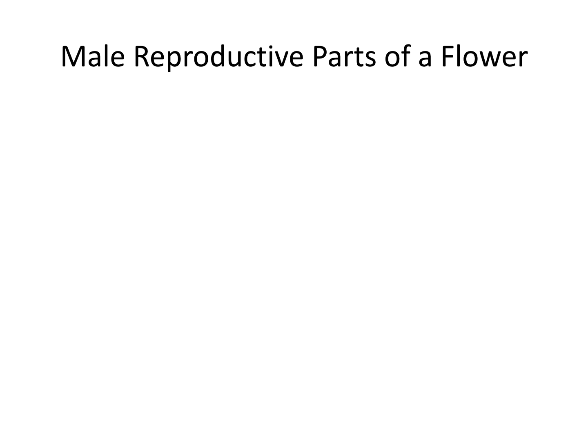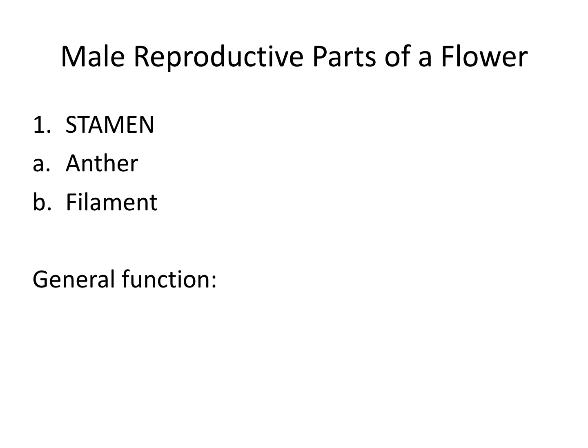First, we're going to talk about the male reproductive parts of a flower. In class today, we labeled the picture, and this unit is pretty straightforward. You need to know how to label a picture, what each thing does, and its general function. The male is generally called the stamen — I always remember it because it 'stays a man,' or stamen. The stamen has two parts: an anther and a filament. They both do different jobs, but together they have one general function.